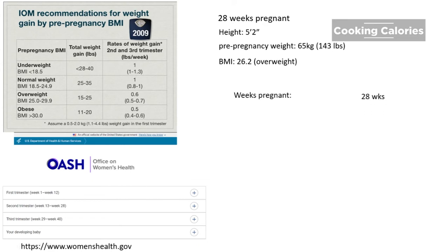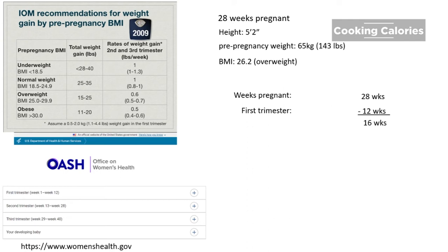She is 28 weeks pregnant, and remember that the first trimester is not included in the weight gain. So let's remove 12 weeks from 28 — that is 28 minus 12 equals 16 weeks. Now we will multiply 16 weeks by 0.6, which is the recommended weight gain per week for an overweight woman. So 16 times 0.6 equals 9.6 pounds.